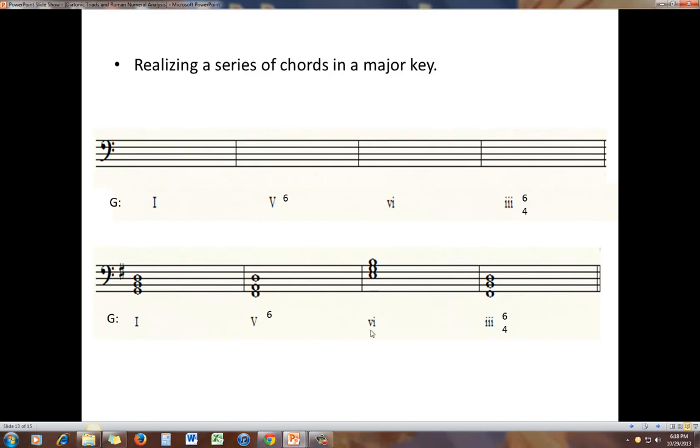The sixth note of the G major scale is E, no indication of inversion, so just build the triad. And three in the key of G is B, second inversion means we want the fifth in the base. So G, B, D goes to the base. And that is the way that you will realize a series of chords in a major key.